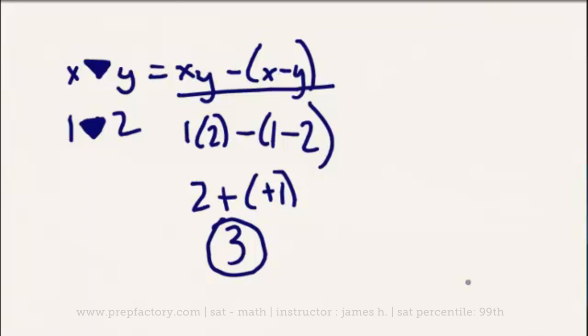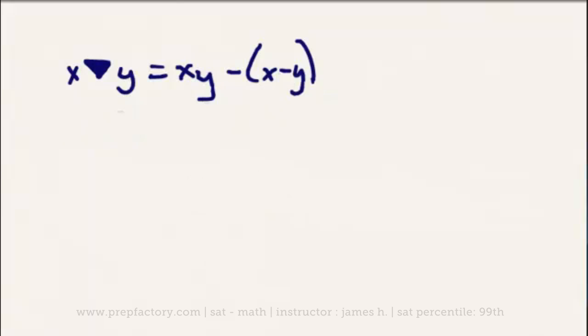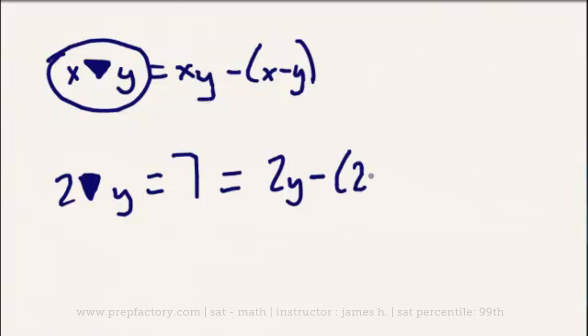Now, of course, our question is a little more complex. Our question asks us, if 2 triangle y equals 7, what is the value of y? Well, basically in this case, we're given a value to plug in for this, but then only one of the values for our variables. So we know then, if x triangle y equals xy minus x minus y, that 2 triangle y, which is going to equal 7, is also going to equal, well, if we plug in our 2s for our xs, we'll then be able to solve for our ys. So if we have then 2y minus 2 minus y.